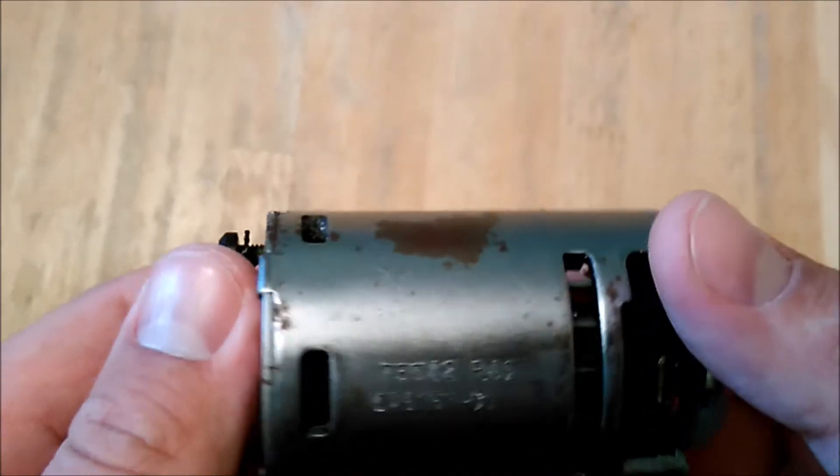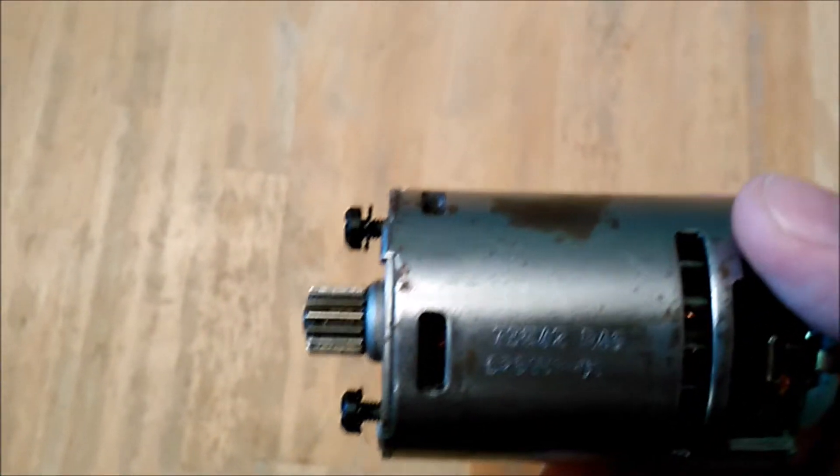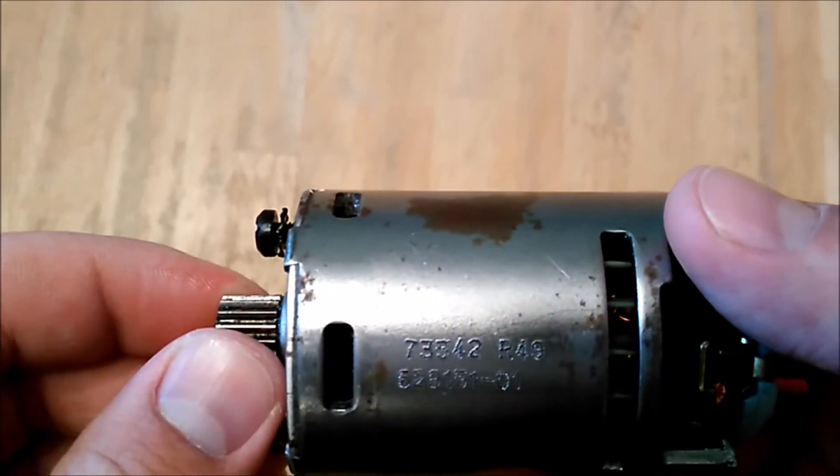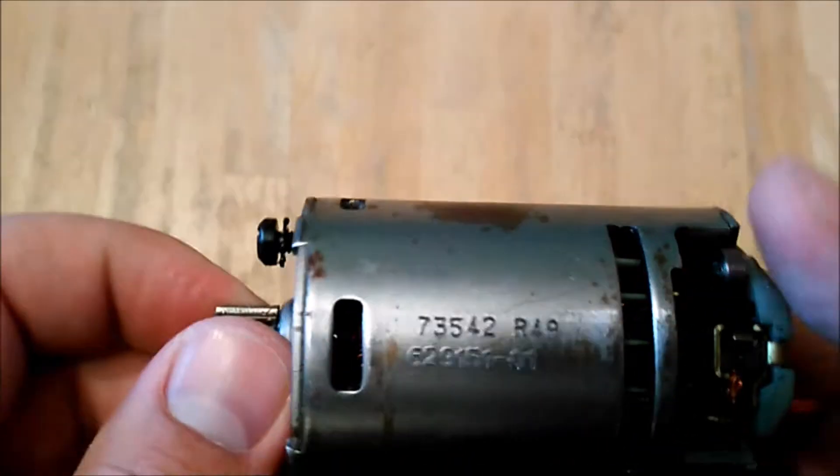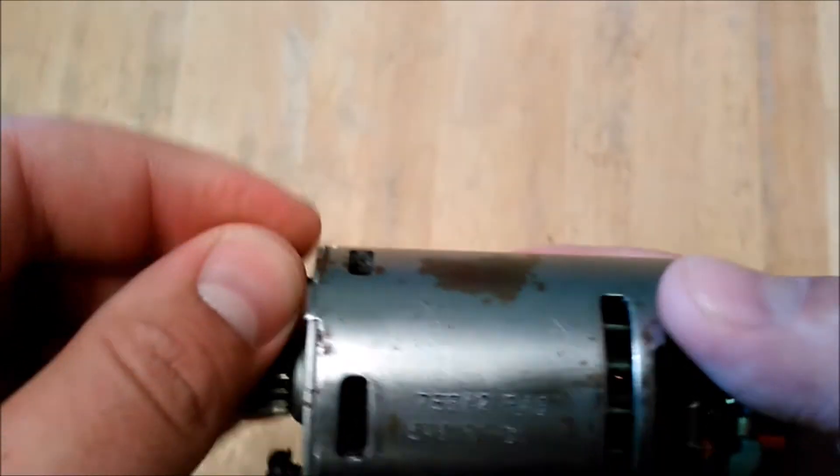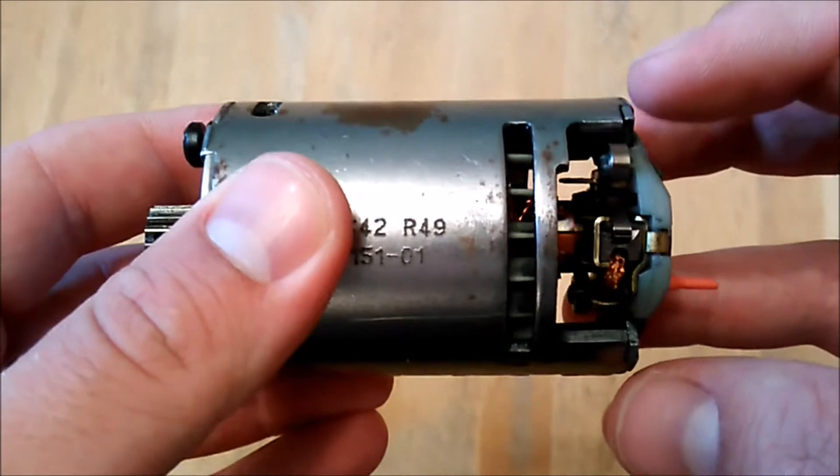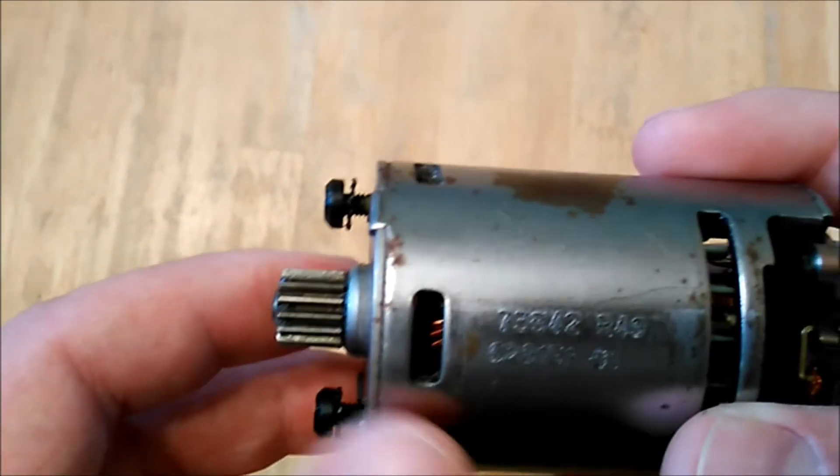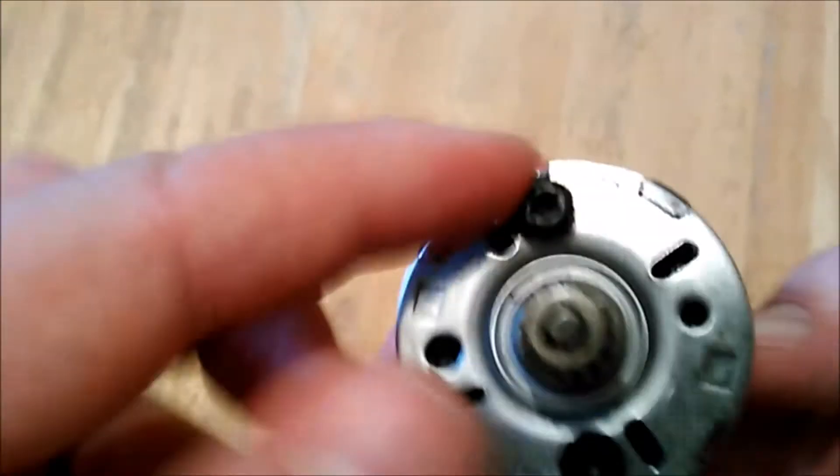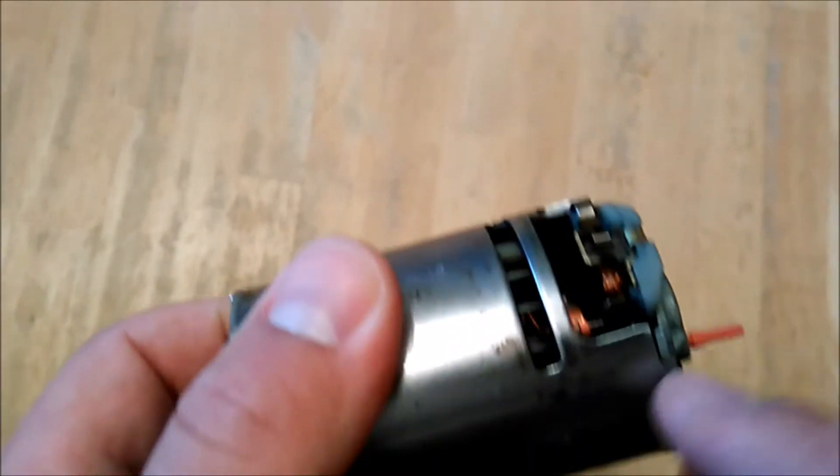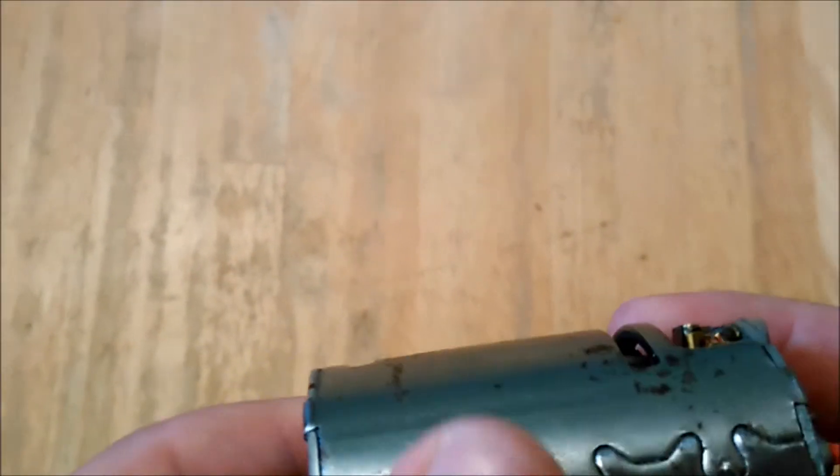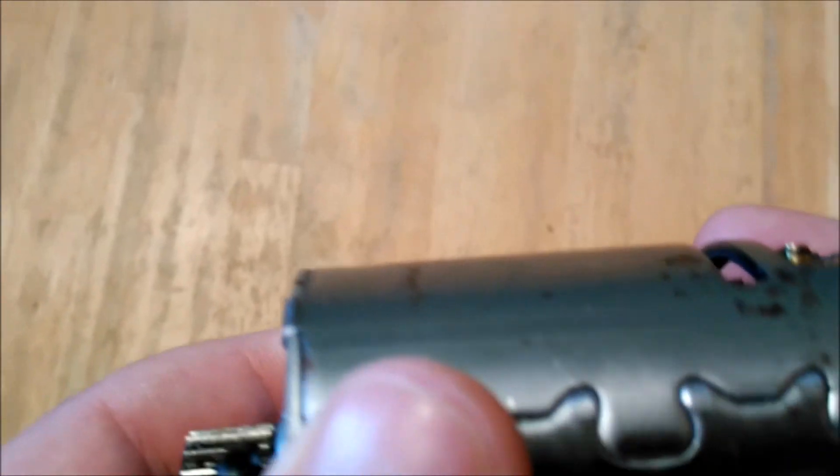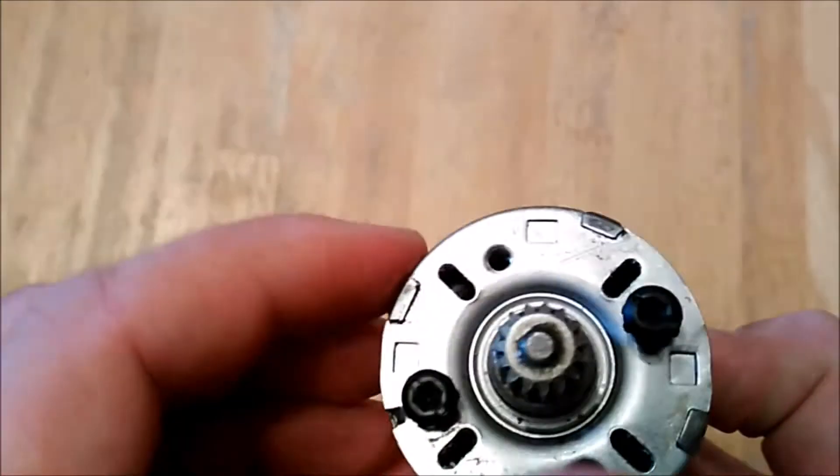This one actually came right out of a drill, a 14.4 volt XRP. I was going to do a video on that but it turned out being so easy that I didn't think it'd be worthwhile. You just pull off four screws in the back, pull off the front transmission chuck part, then you unscrew it with these two screws and it comes out. You unclip the two wires but it was so easy that you'll be able to figure it out.